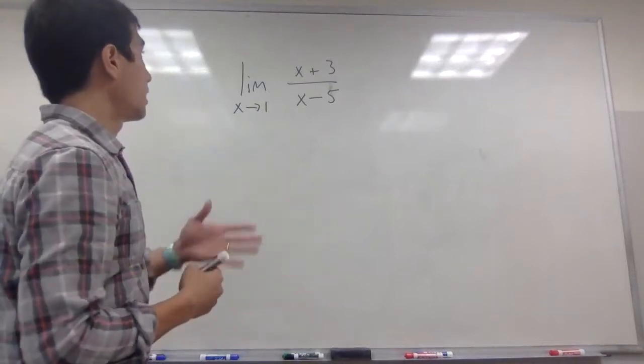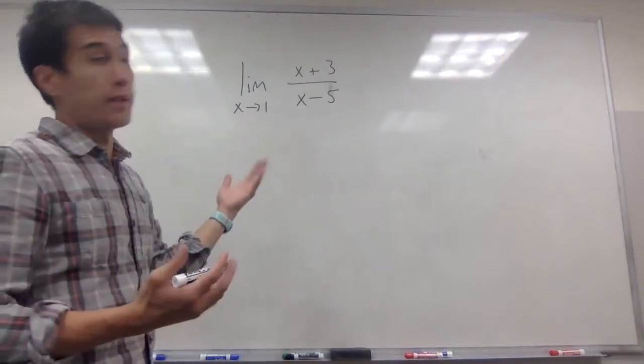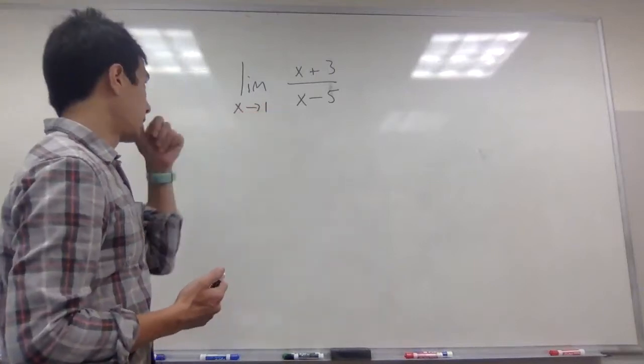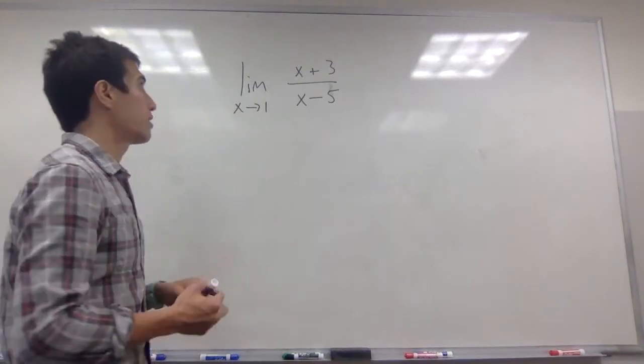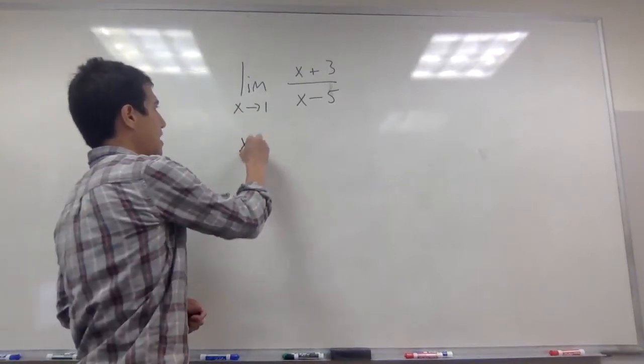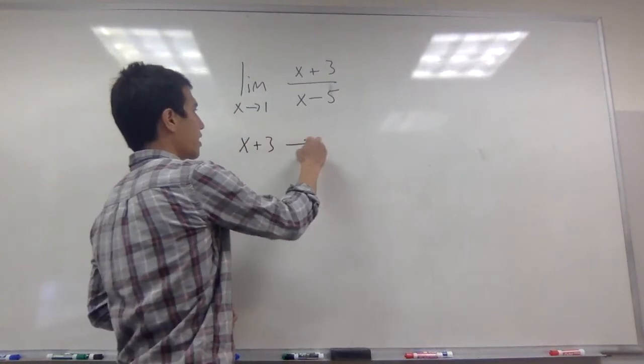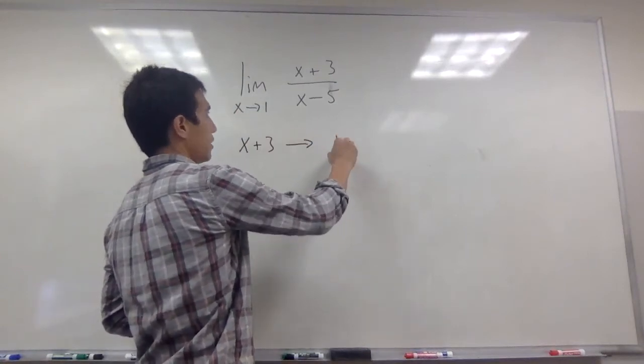So if I think about this limit, the limit as x approaches 1 of x plus 3 divided by x minus 5, I can think that as x is going to 1, x plus 3 is going to 4.